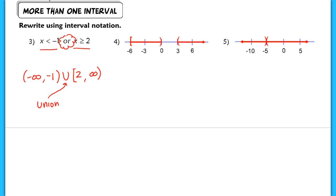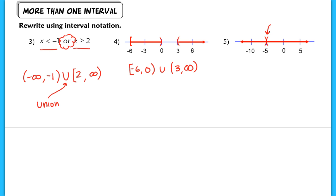In example 4, it's a little easier because we have a diagram. We go from negative 6 to 0 — 0 is not included — then join that with the unbounded interval from 3 to positive infinity, with an open parenthesis on both 3 and infinity. In example 5, it's a bit odd: we have two separate unbounded intervals with an open parenthesis on negative 5, meaning all real numbers except negative 5. In interval notation, we write negative infinity to negative 5 with an open parenthesis, joined by union with negative 5 to positive infinity with an open parenthesis.